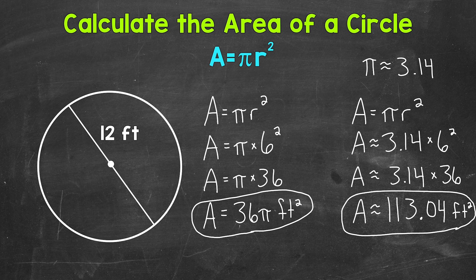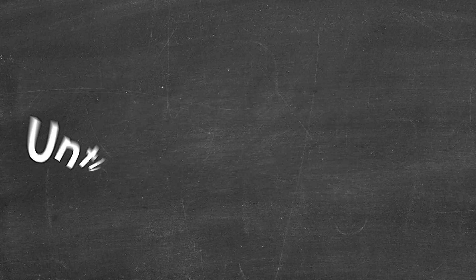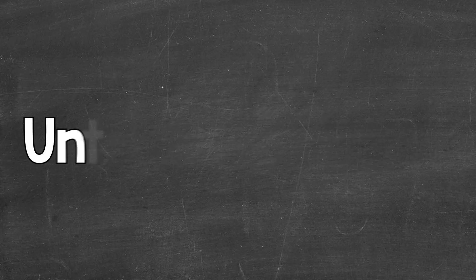So there you have it — that's how you calculate the area of a circle. Use the formula area equals pi r squared, plug in the radius and square it, then write the area in terms of pi, or use an approximate version of pi to get an approximate area in decimal form. I hope that helped. Thanks so much for watching. Until next time, peace.